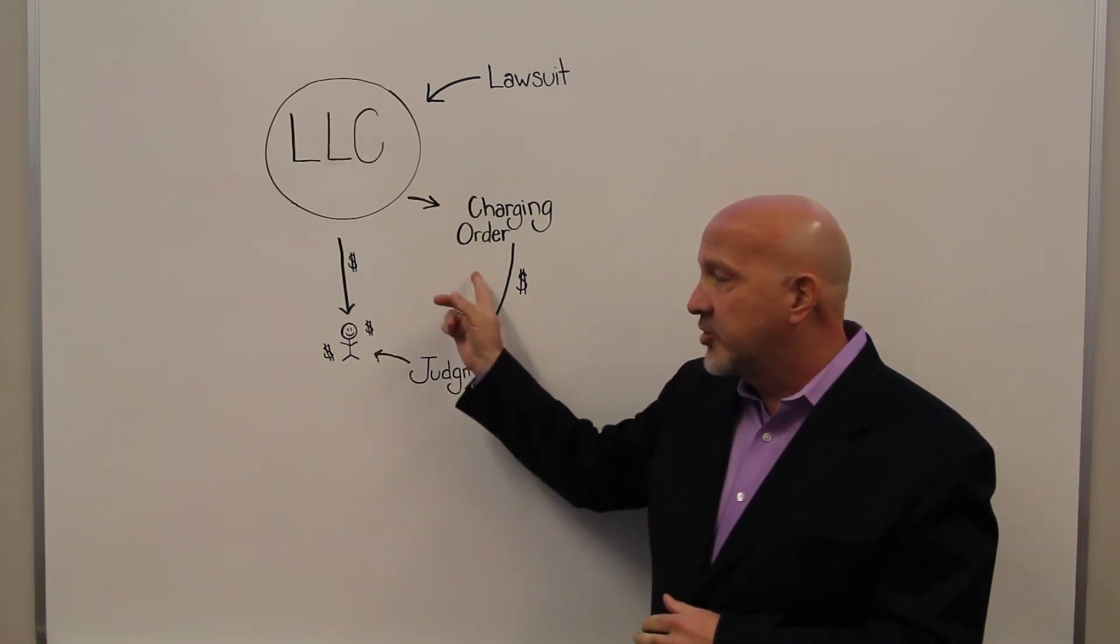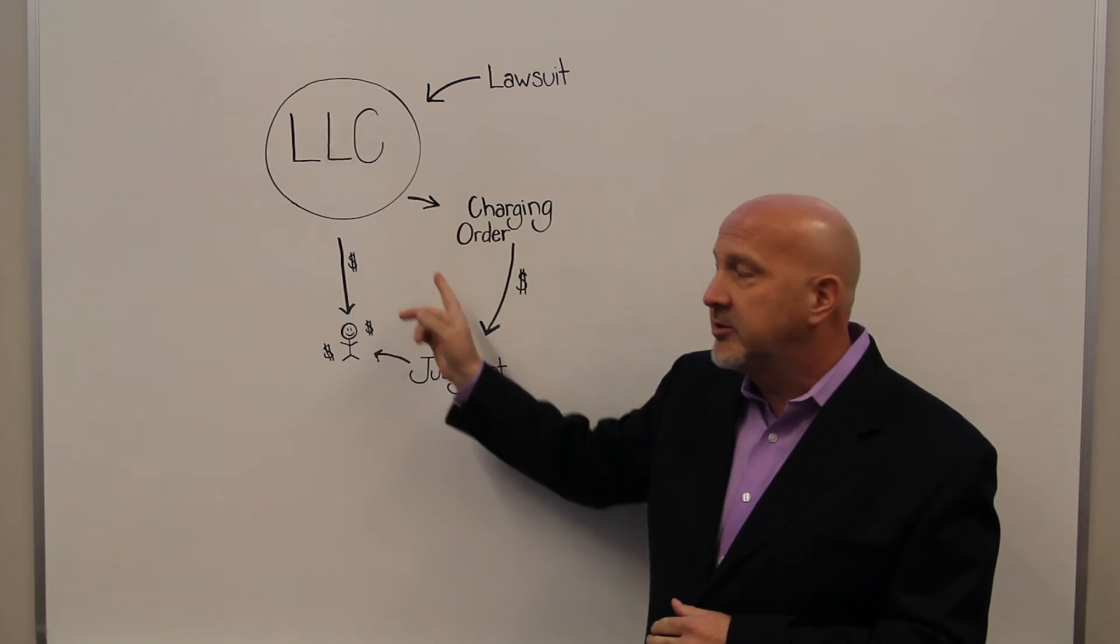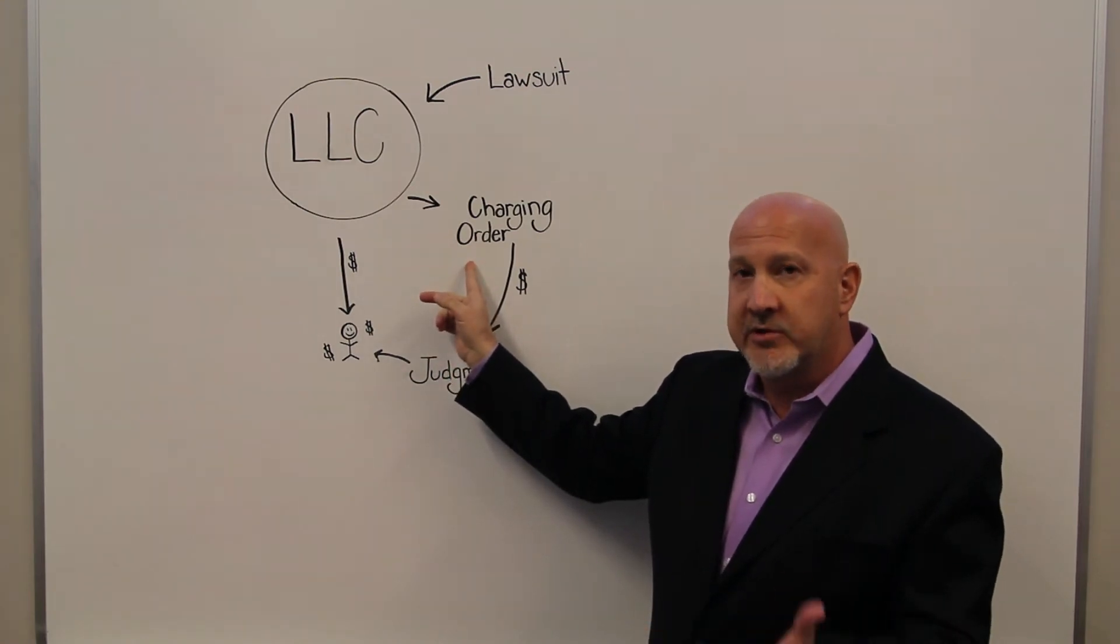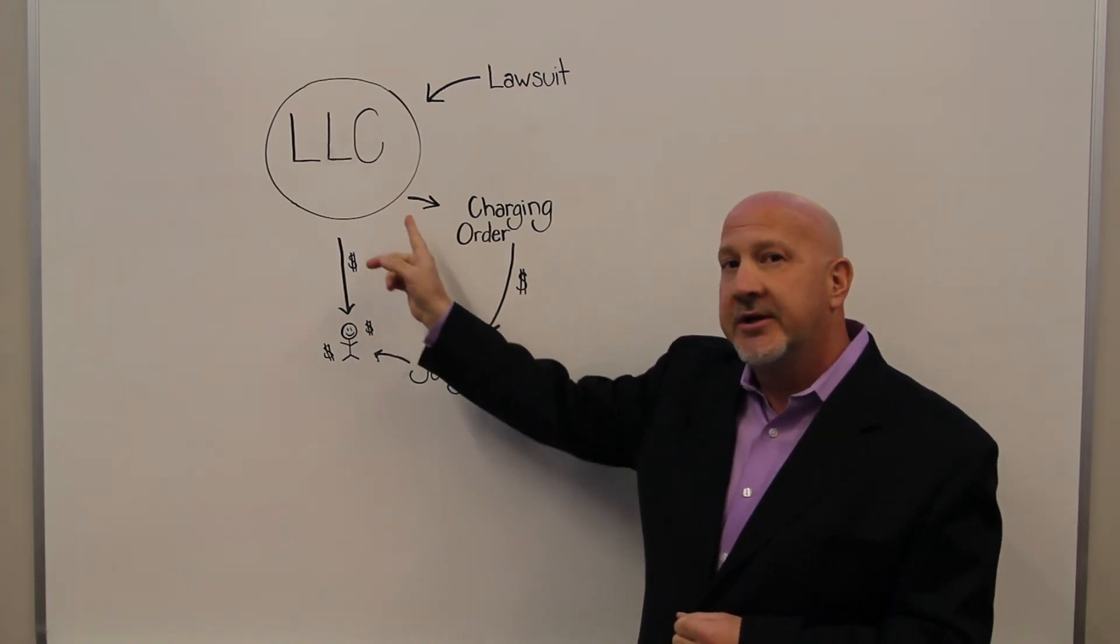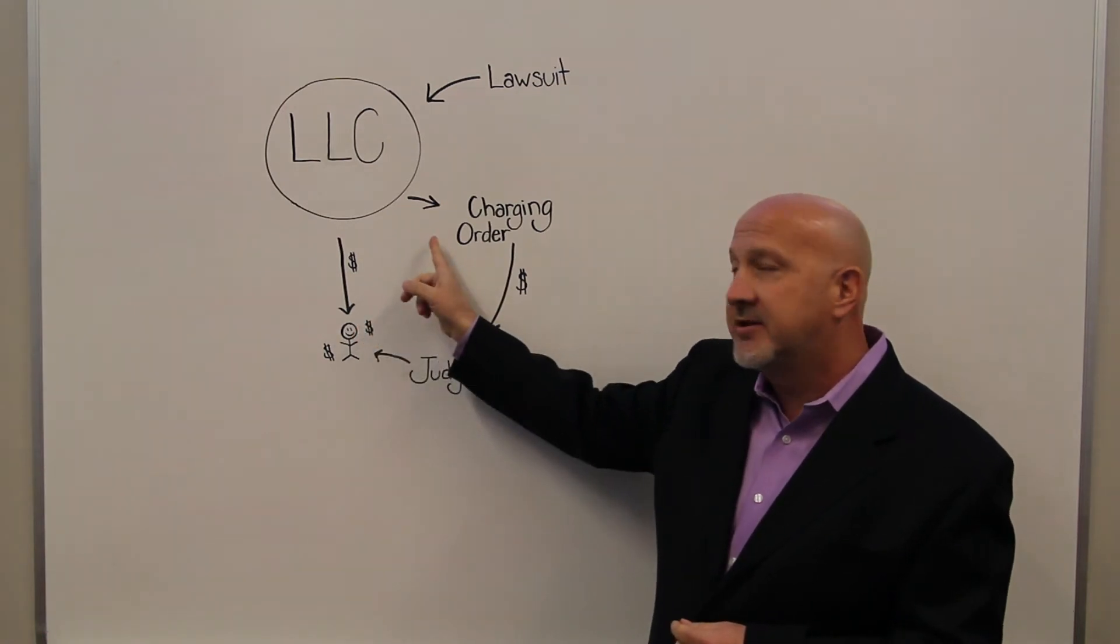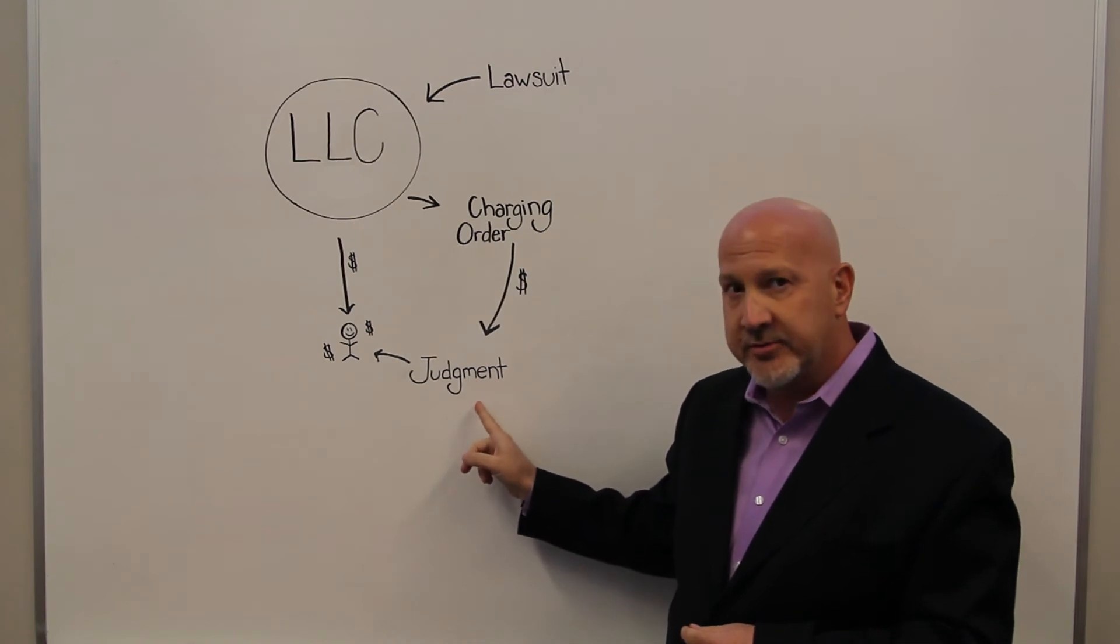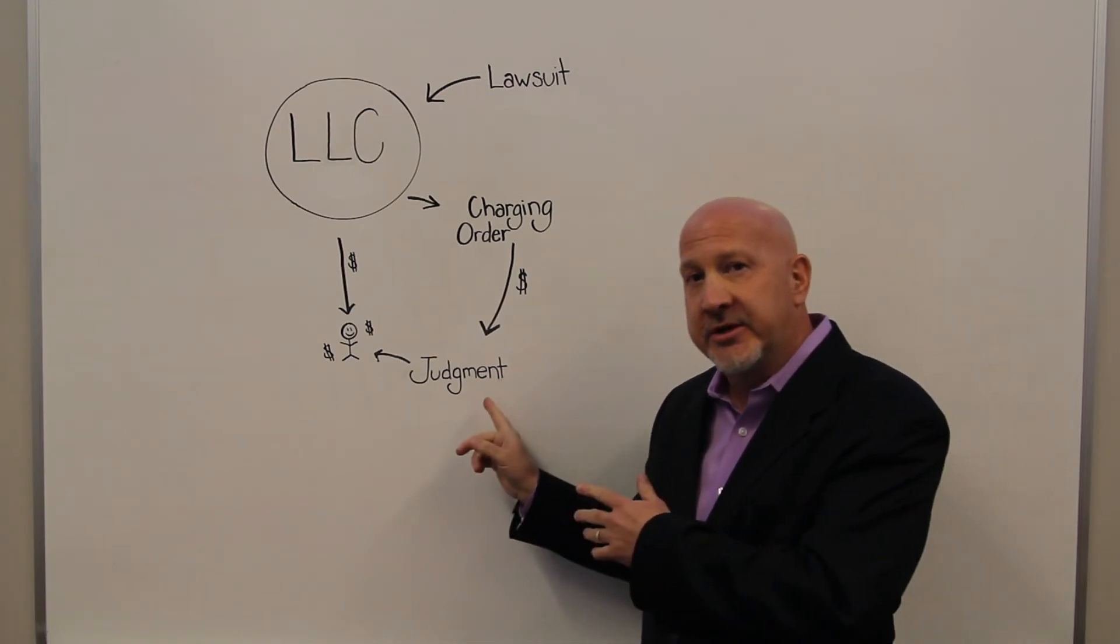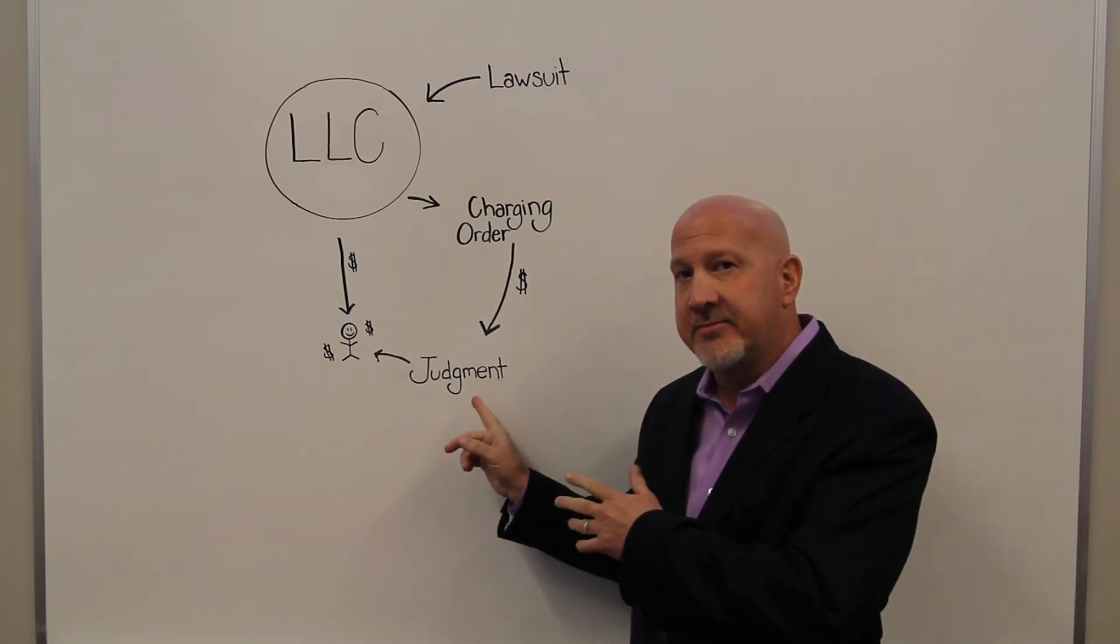And if there's a charging order in place and there's a distribution made, a charging order is an order from the court to deliver that payment instead of making it to the member of the LLC, to deliver that payment to the judgment creditor, and they would get the distribution instead of the member.